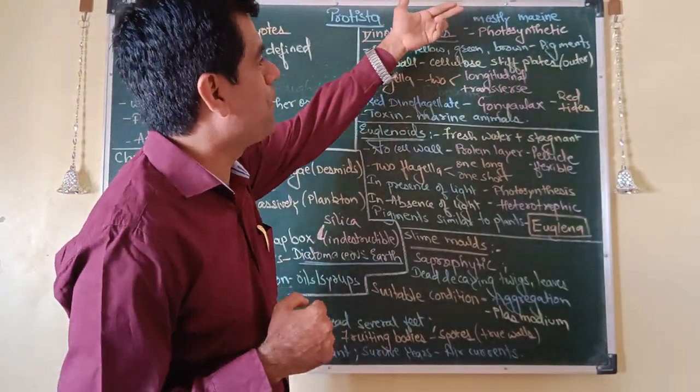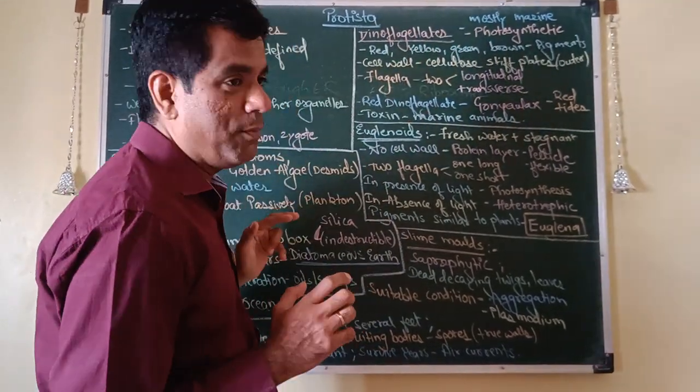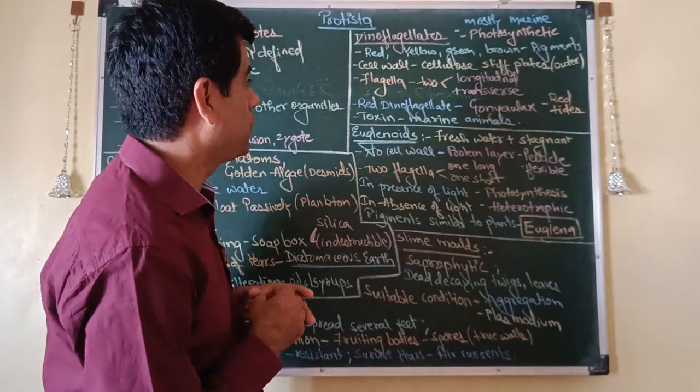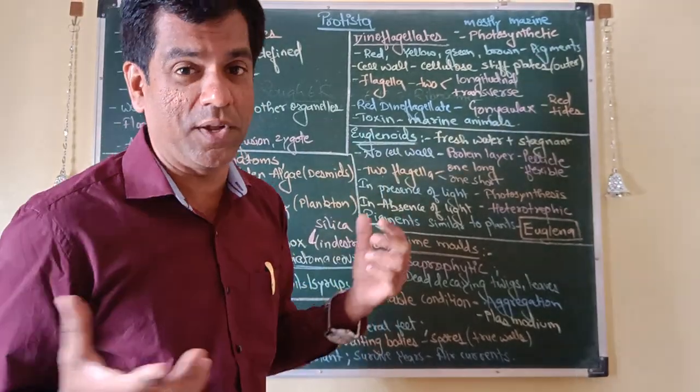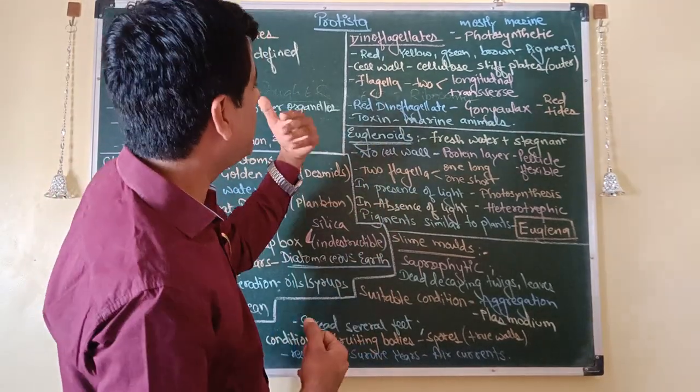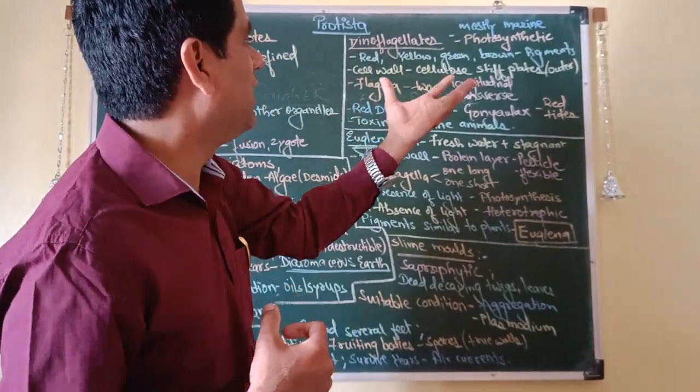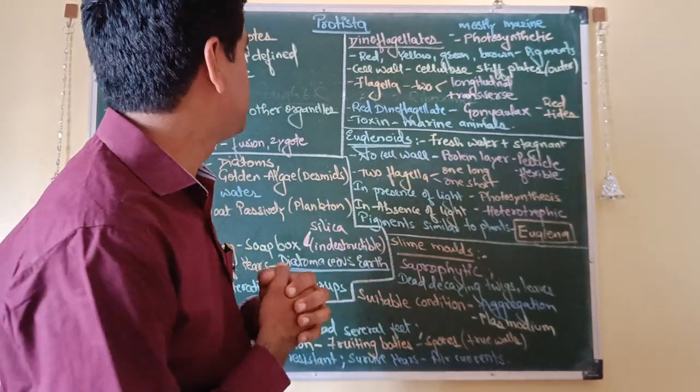You have dinoflagellates, which are mostly marine, they are also photosynthetic. I really love these photosynthesizers because they are going to prepare their own food, they prepare the food for us, they barely harm us. But these do a bit. You have different colors, you have red, yellow, green, brown, and that is because of the different pigments which they have.